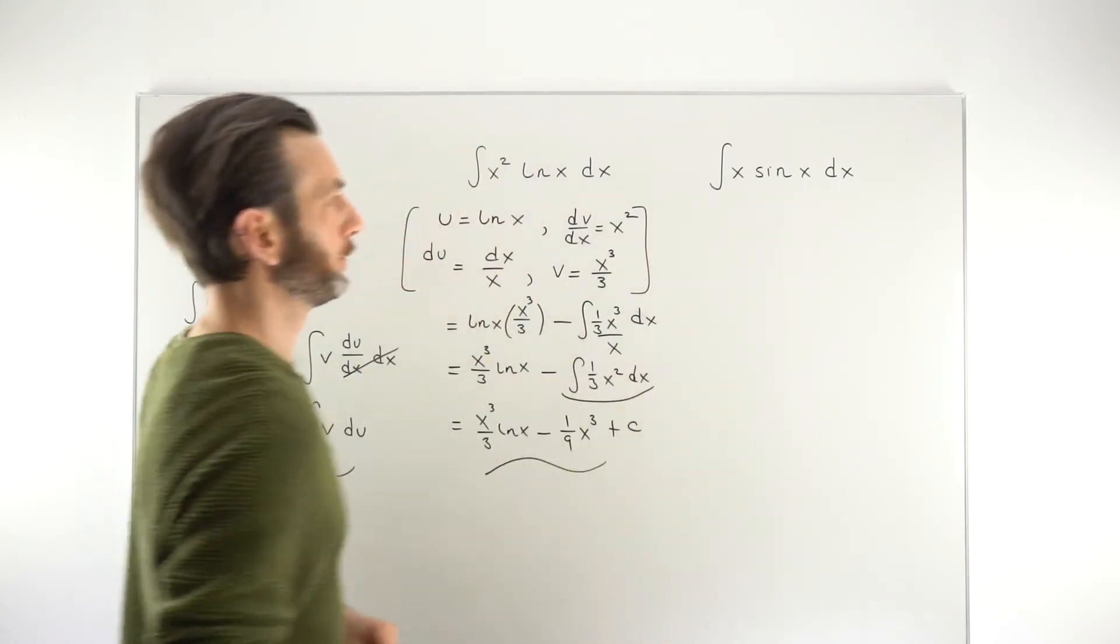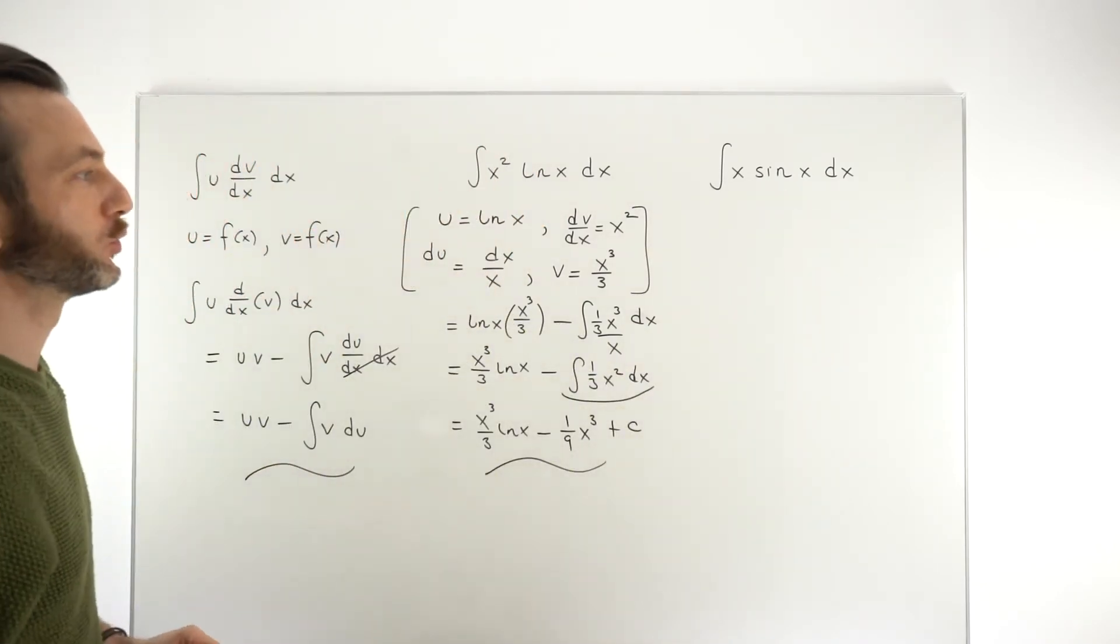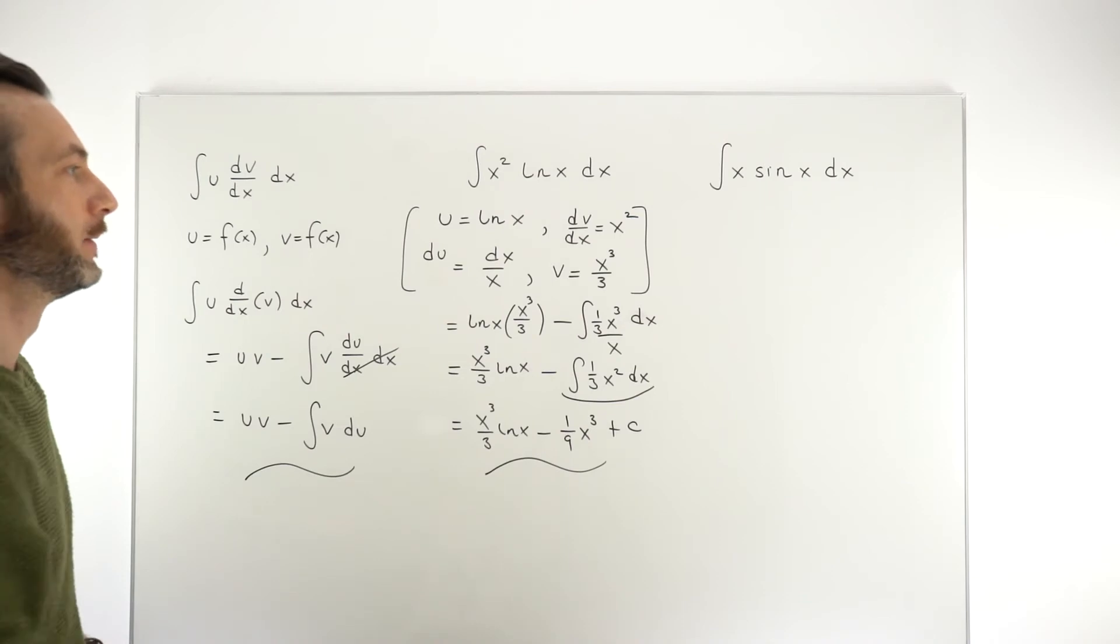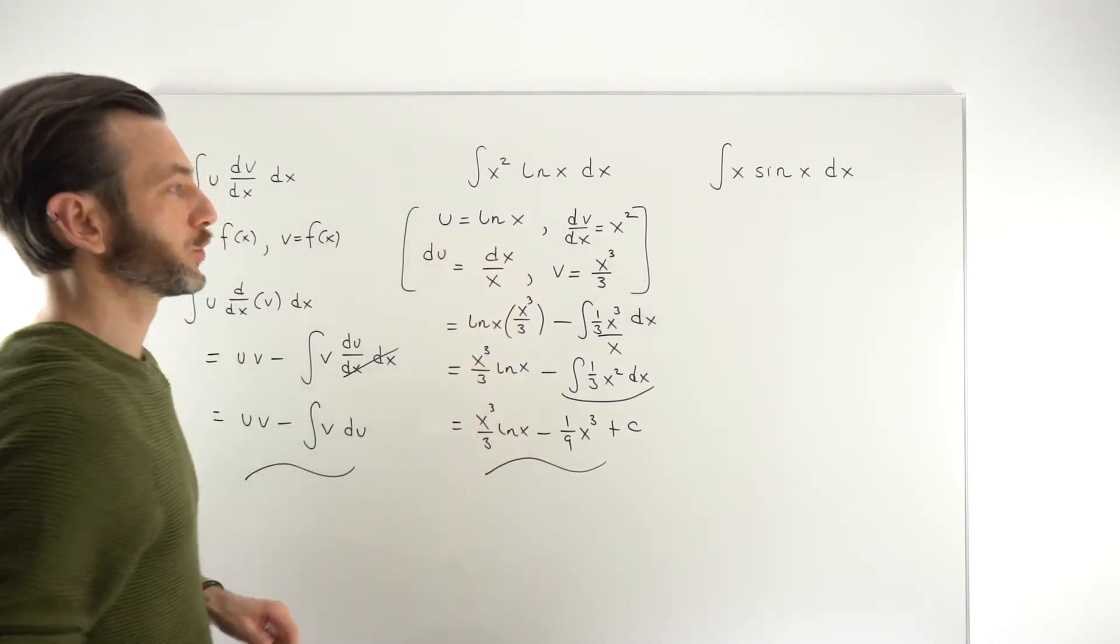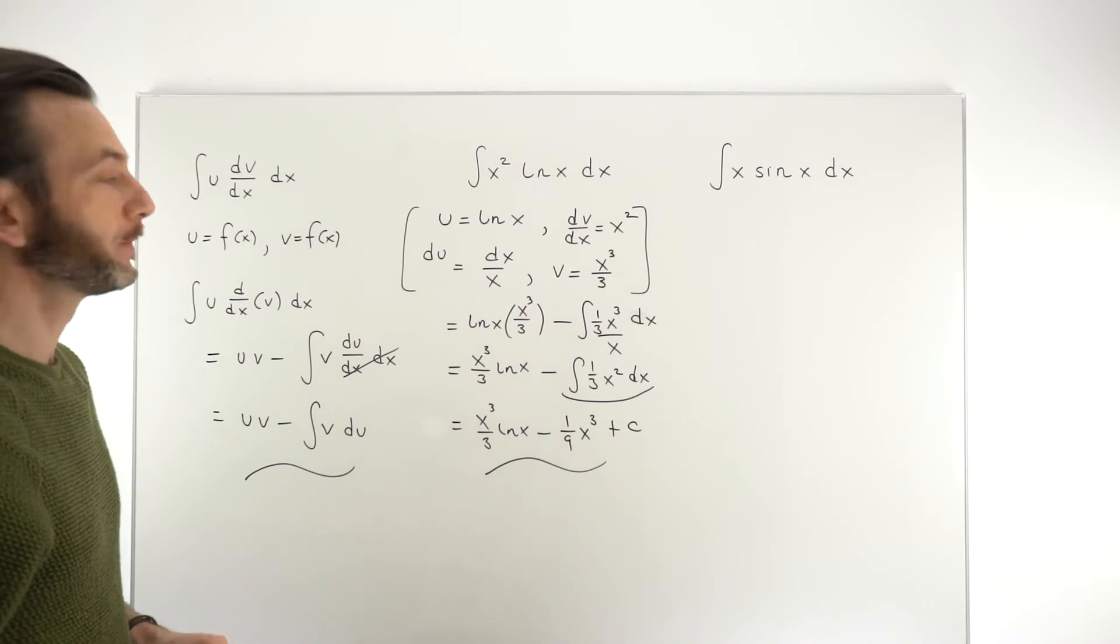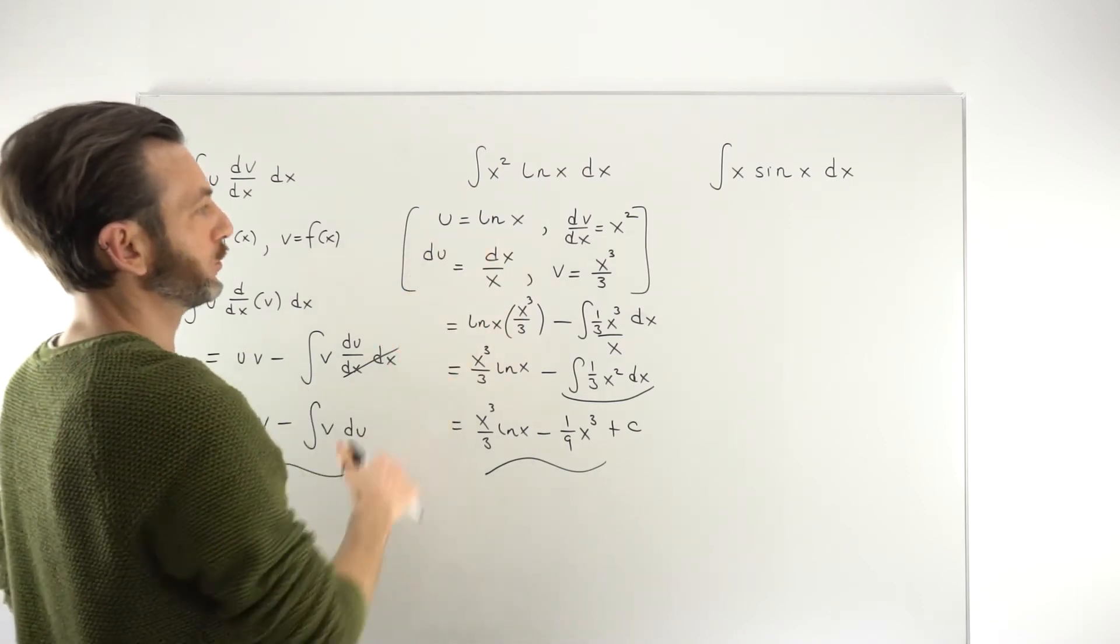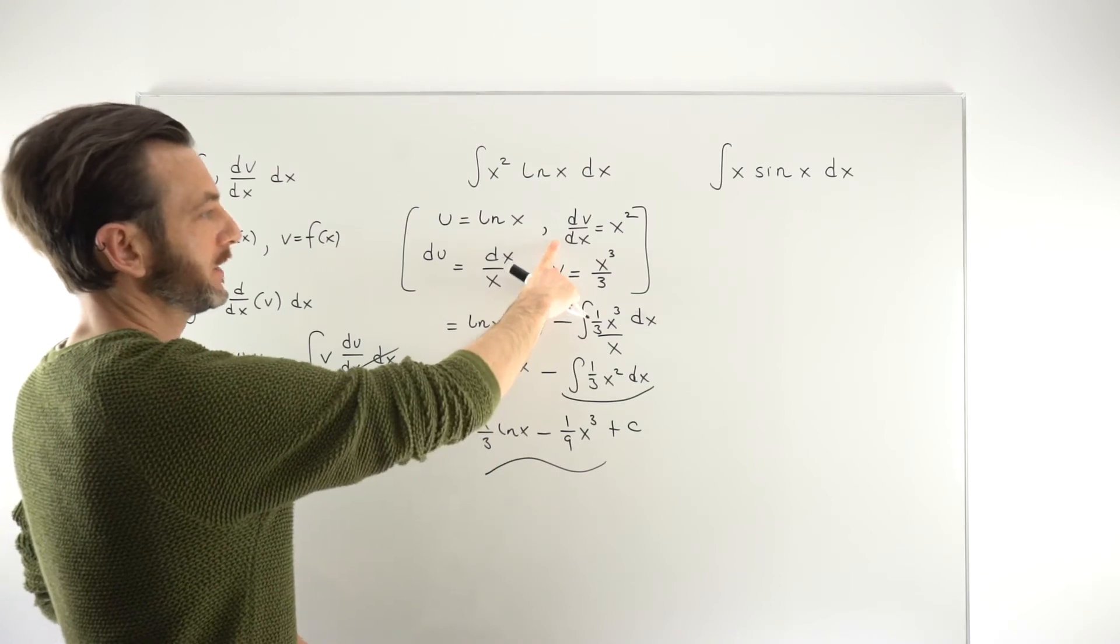So this one, it's maybe a little less obvious what to make your choice for u and v, but my advice would be try to get something for u, which is easily differentiable because you're going to be differentiating the u function. And then you want something for v, which is easily integratable.